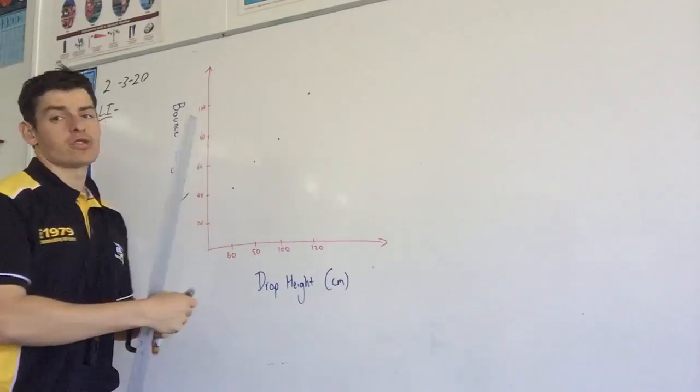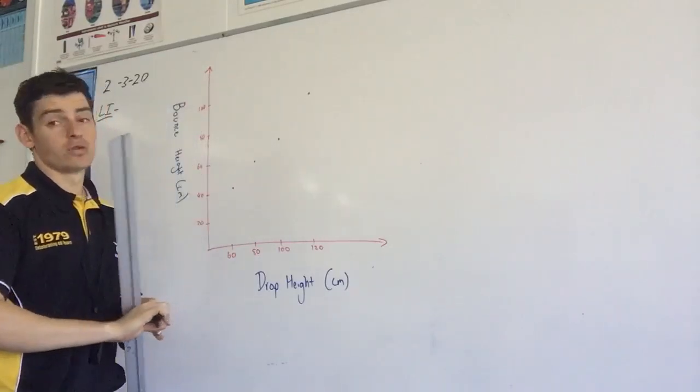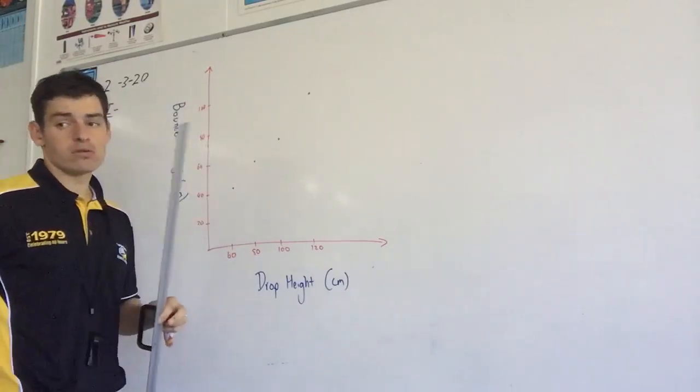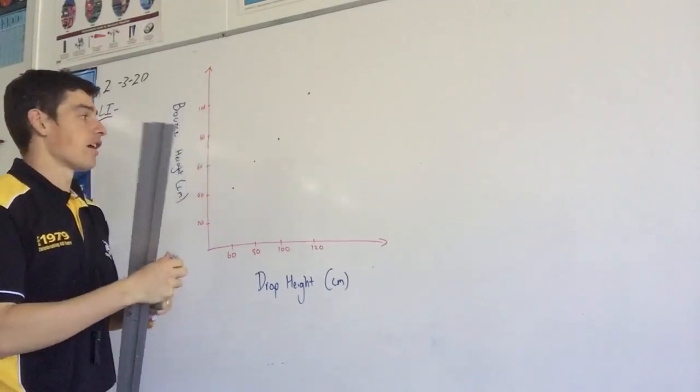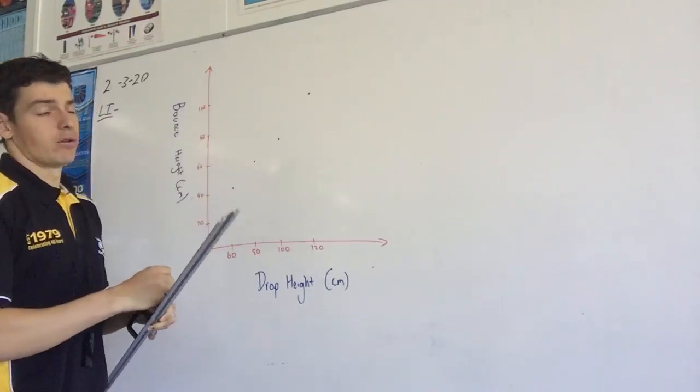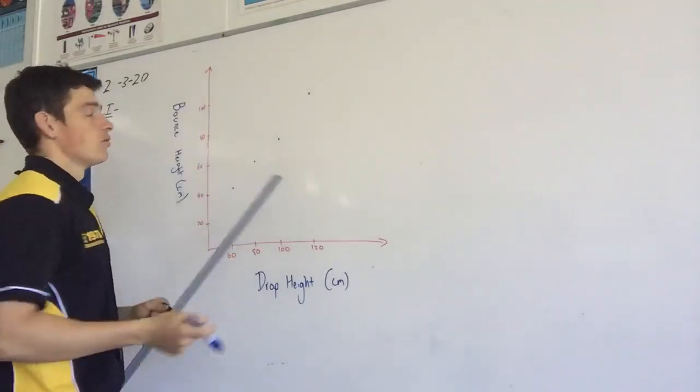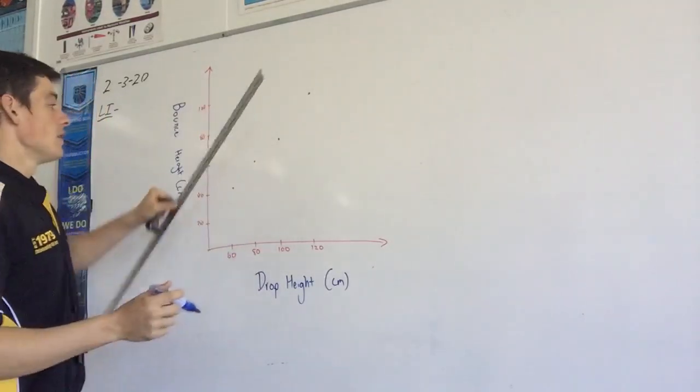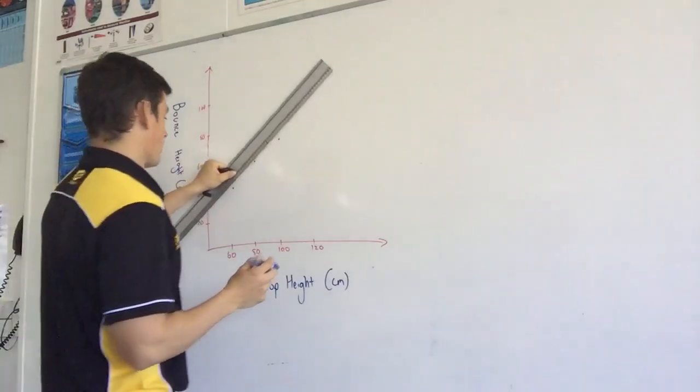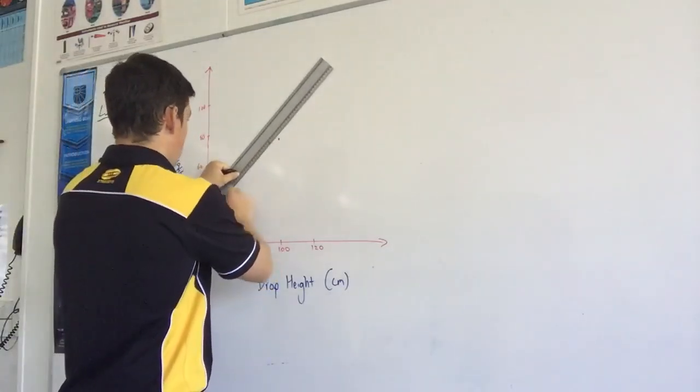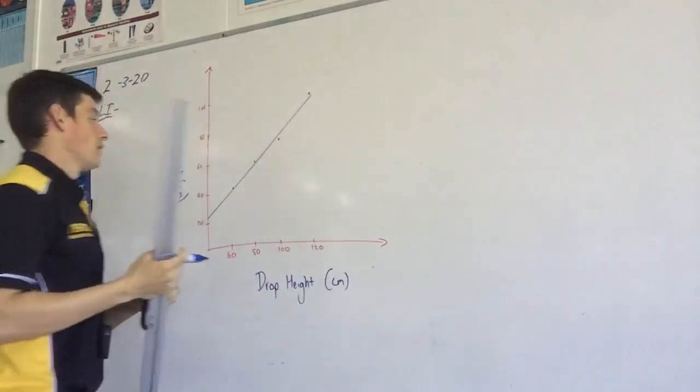I just wanted to do it by hand to showcase some of the reasons why we do use Google Sheets and graphing technology rather than by hand. Because if you look at these dots that are on the board, it's very difficult to determine the type of relationship you've got. That's where the computer programs can help. They can help us identify what's the relationship between our variables.